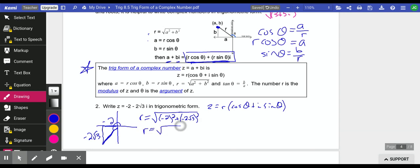plus negative 2 root 3 squared. So r is 4 plus, remember, you've got to square both these things. This is 4 times 3. That's the square root of 16. So r is just 4.